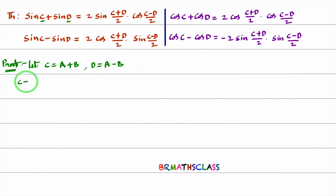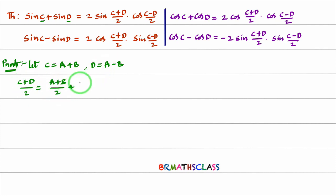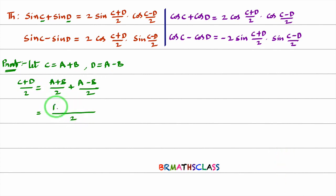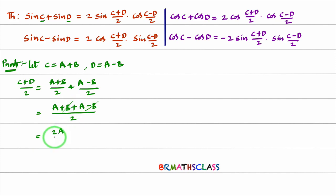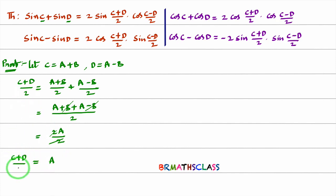Now, calculate what is (C+D)/2 and what is (C−D)/2. For (C+D)/2: C is A+B, D is A−B. Taking LCM as 2, the numerator gives A+B+A−B. The B terms cancel, leaving 2A divided by 2, which equals A. So (C+D)/2 = A.